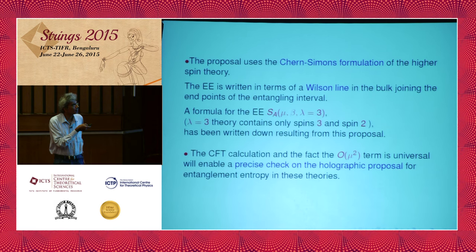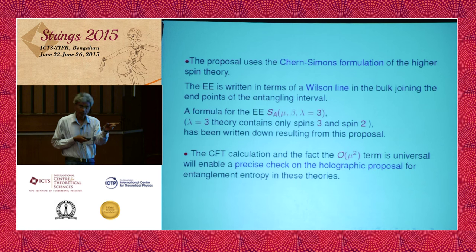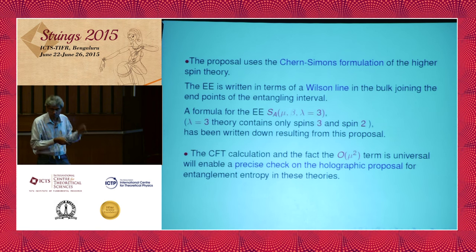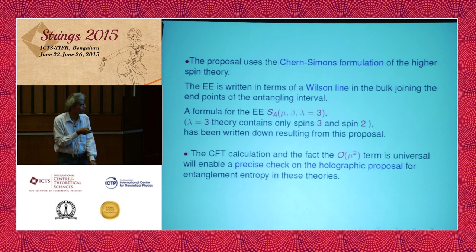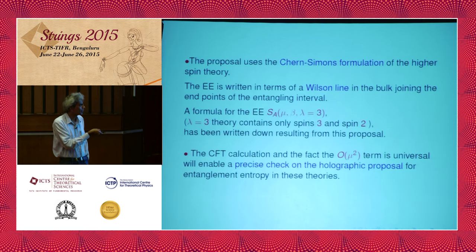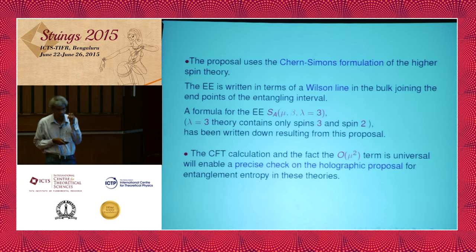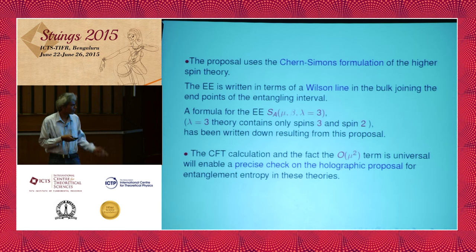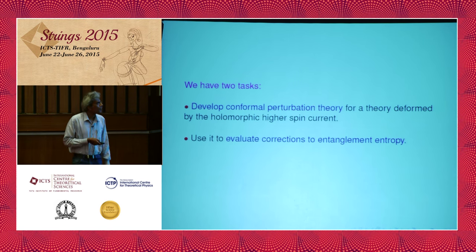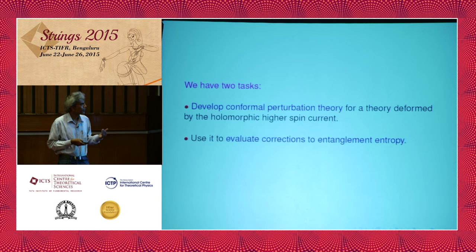As we heard in the previous talk, there is a proposal for the Wilson line for entanglement entropy. Since we have this universal result, it generalizes the Ryu-Takayanagi proposal for higher spin theories and can serve as a check. The proposal uses a Chern-Simons formulation and is written in terms of the Wilson line in the bulk joining the two endpoints of the interval. We focus on the SL(3) version with lambda equals 3, and there is a precise expression for the entanglement entropy in terms of this Wilson line. The CFT calculation at order mu squared can serve as a precise check for this proposal. Our two tasks are: develop conformal perturbation theory for a theory deformed by a holomorphic higher spin current, and use it to evaluate the entanglement entropy.